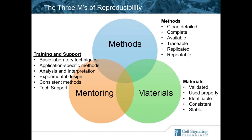Methods, on the other hand, fall mostly into making sure that they're clear and detailed, complete, available, traceable, and that they can be replicated or repeated. This is really important, and I'll talk about the role of journals, scientists, and vendors in this space. Finally, the materials that you use to do your experiments need to be highly validated. You need to use them properly — an antibody's performance in one application doesn't predict how it'll perform in another. The materials need to be easily identified, consistent — whether lot-to-lot or use-to-use — and they need to be stable.